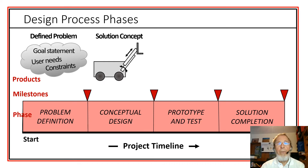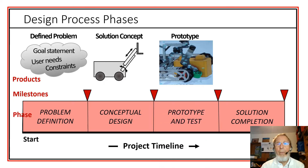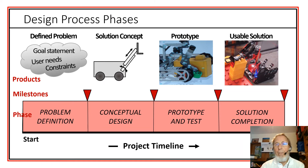Once we have settled on the concept that makes the most sense and has the most potential, we move into prototyping, where we actually begin building a physical model or some kind of detailed model that will enable us to evaluate how well it functions. Do the parts fit together? Do they perform as we had intended? Once we have determined that we have the quality and potential, we move into the final completion stage where we develop that finished product to accomplish the needs we identified up front.